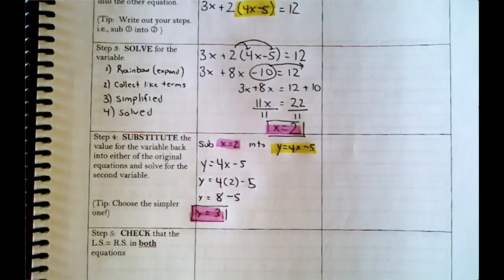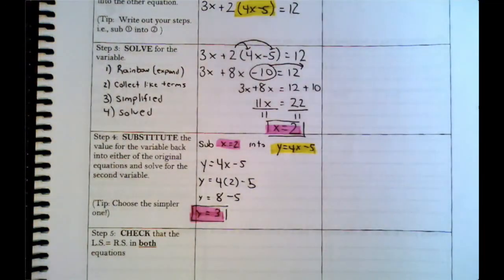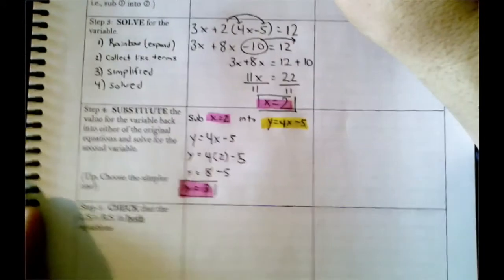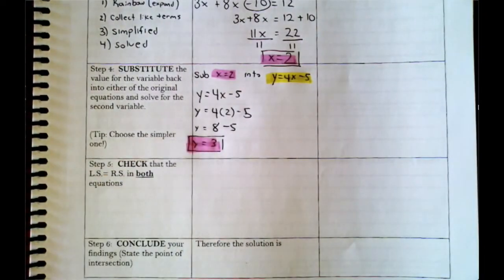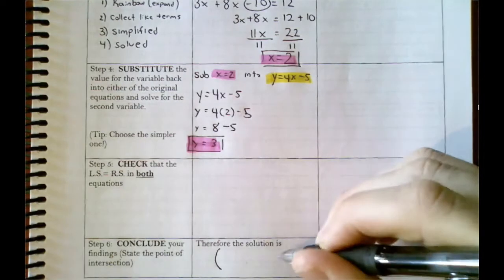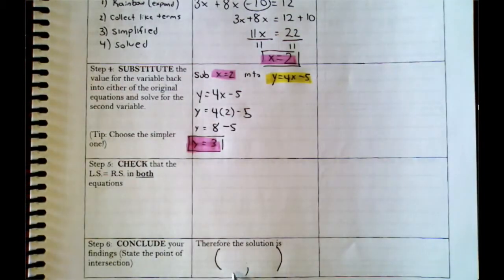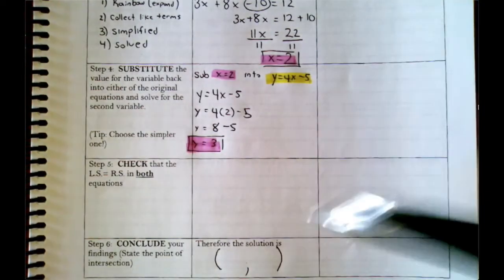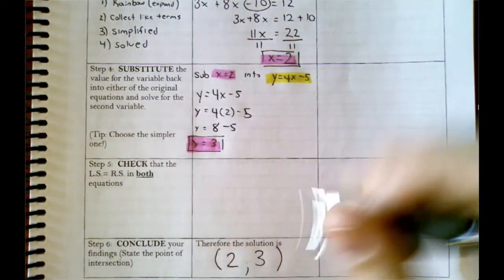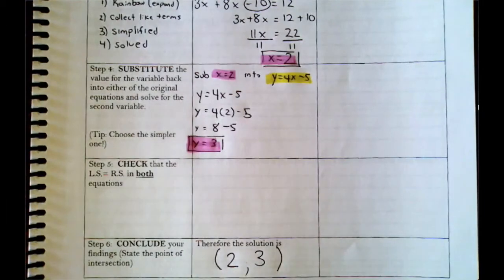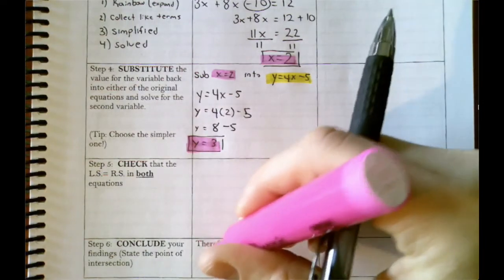Now that we know both x and y, we have our answer. Skipping to step 6: conclude. Our answer is a point with an x and a y. Our x is 2 and our y is 3, giving us the point of intersection (2, 3). You can then check your answer.